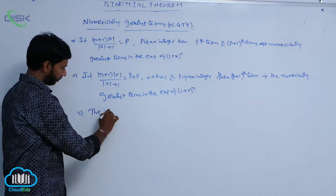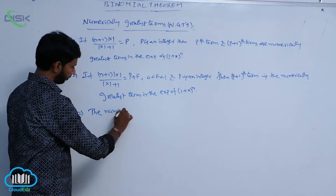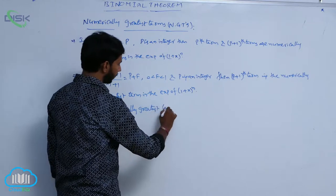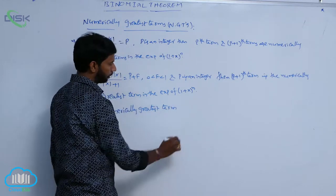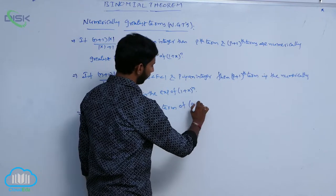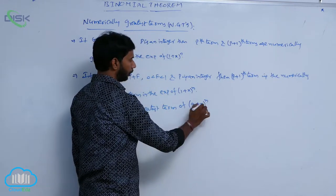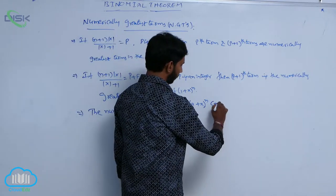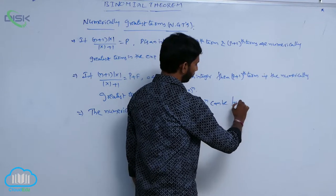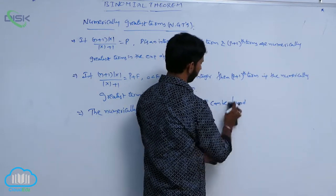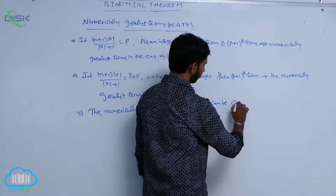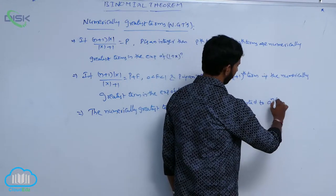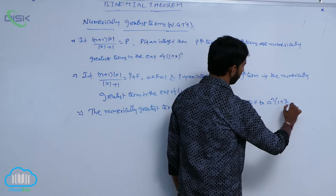The numerically greatest term of (A + X)^N can be found by converting it into A^N into (1 + X/A)^N.